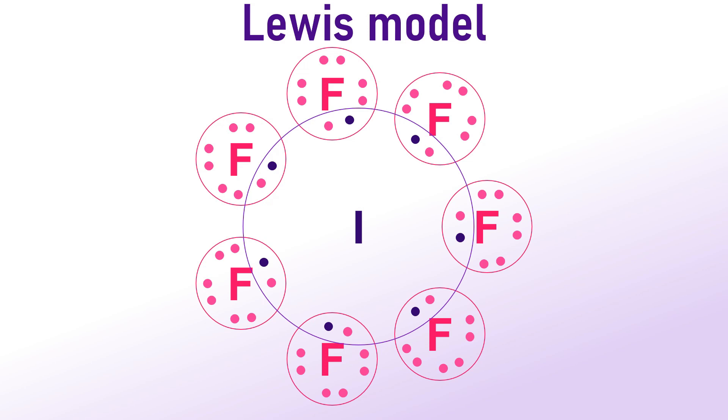Now, the question that arises is, how do we determine that in the IF7 molecule, Iodine forms 7 bonds, while fluorine typically forms only 1 bond?